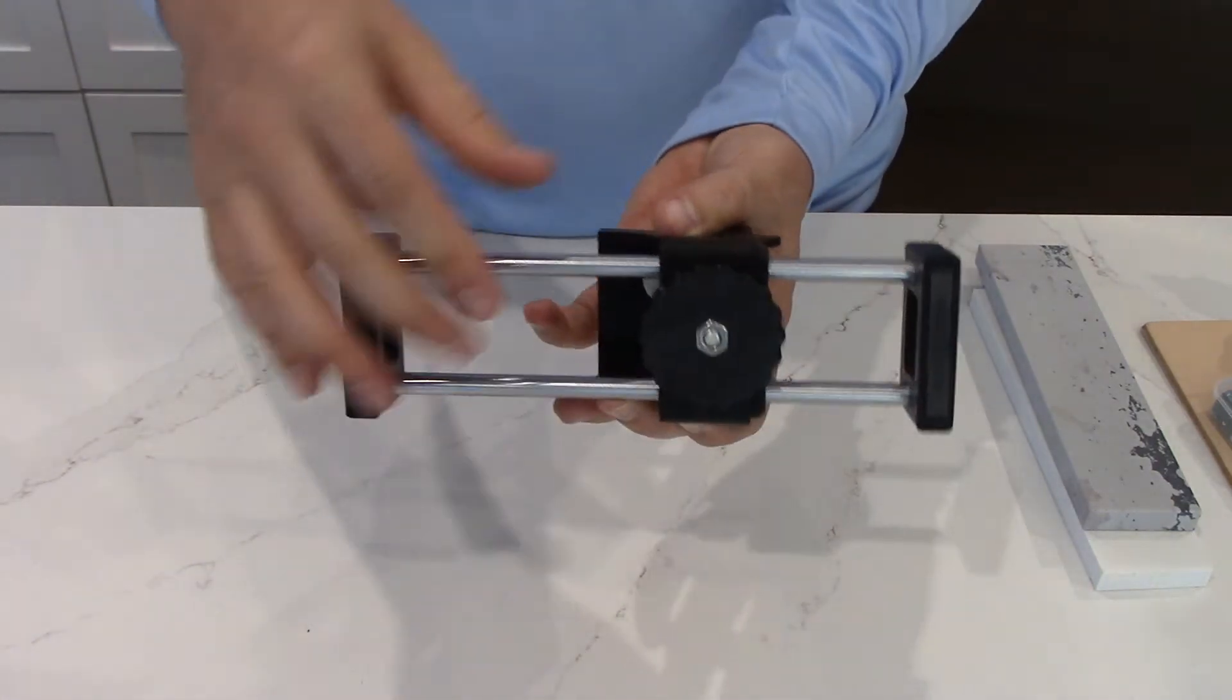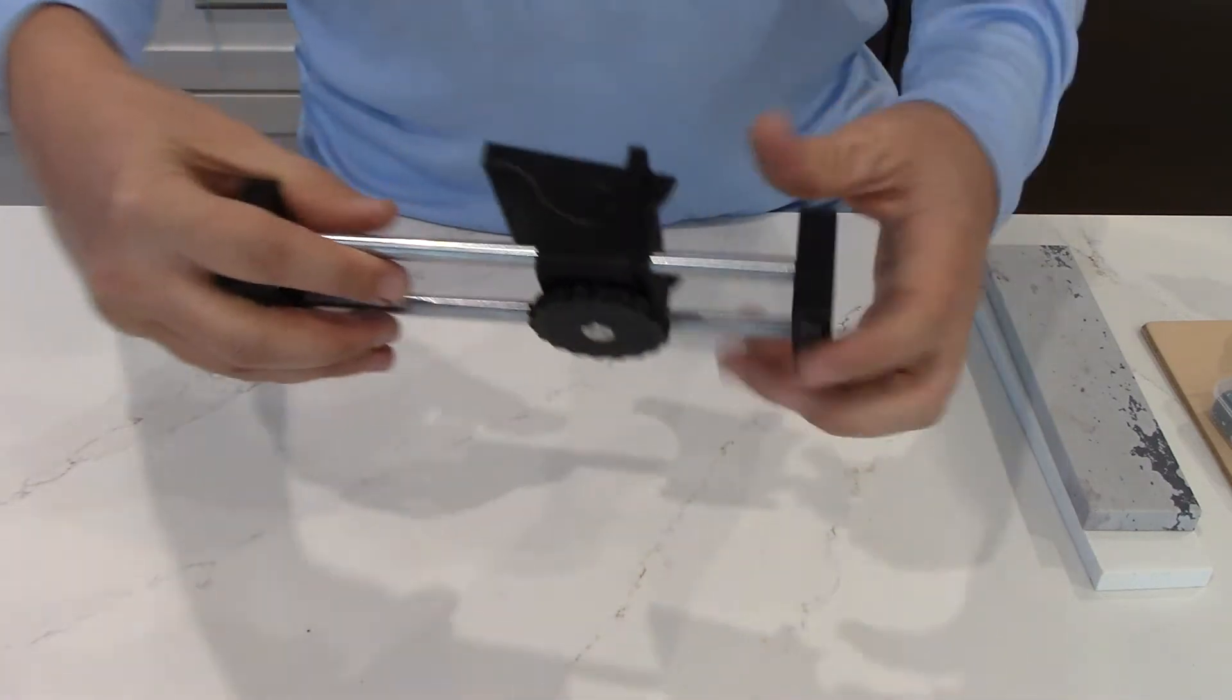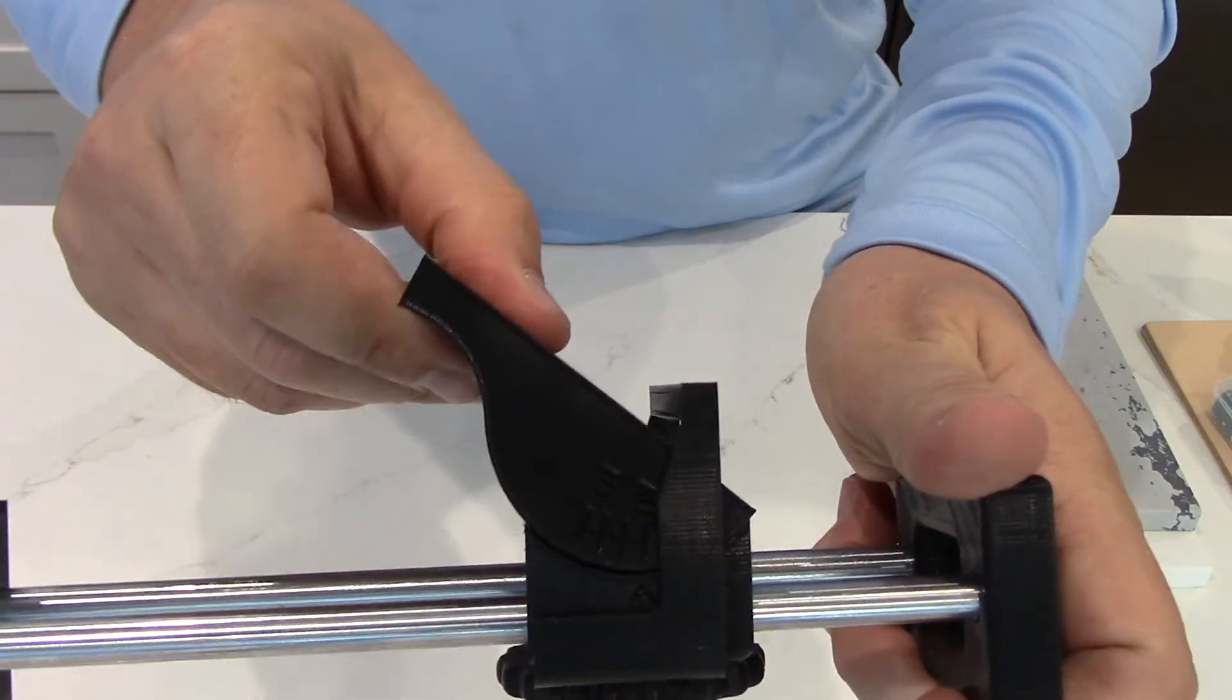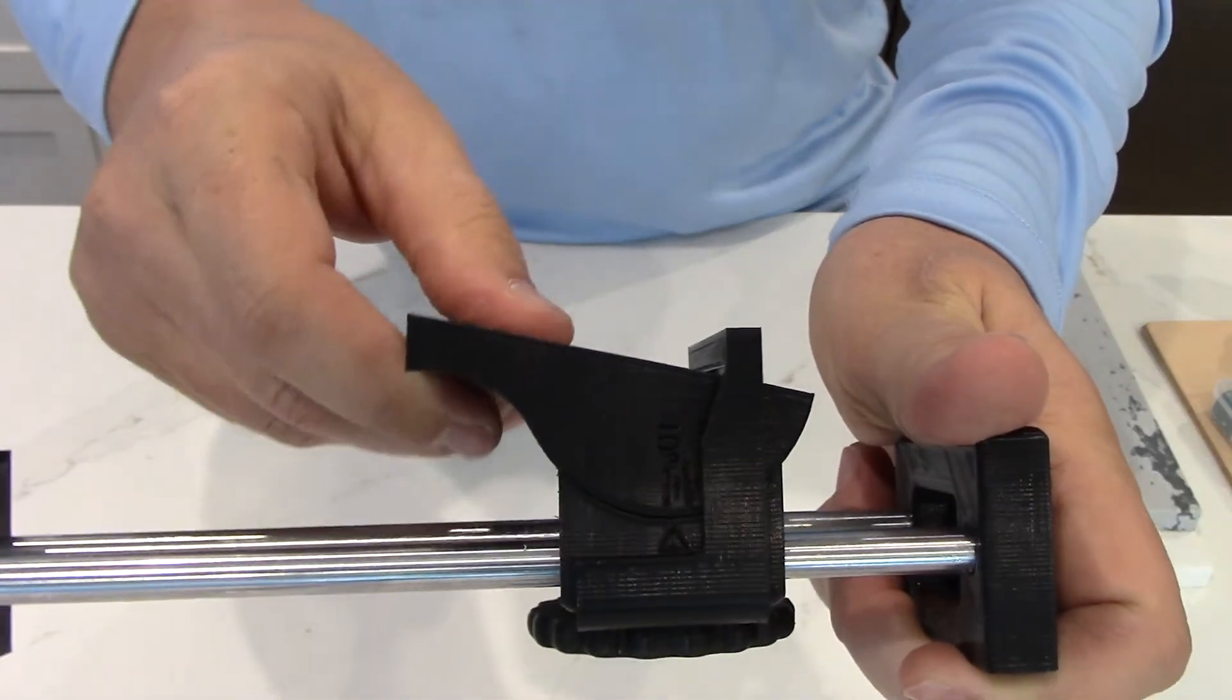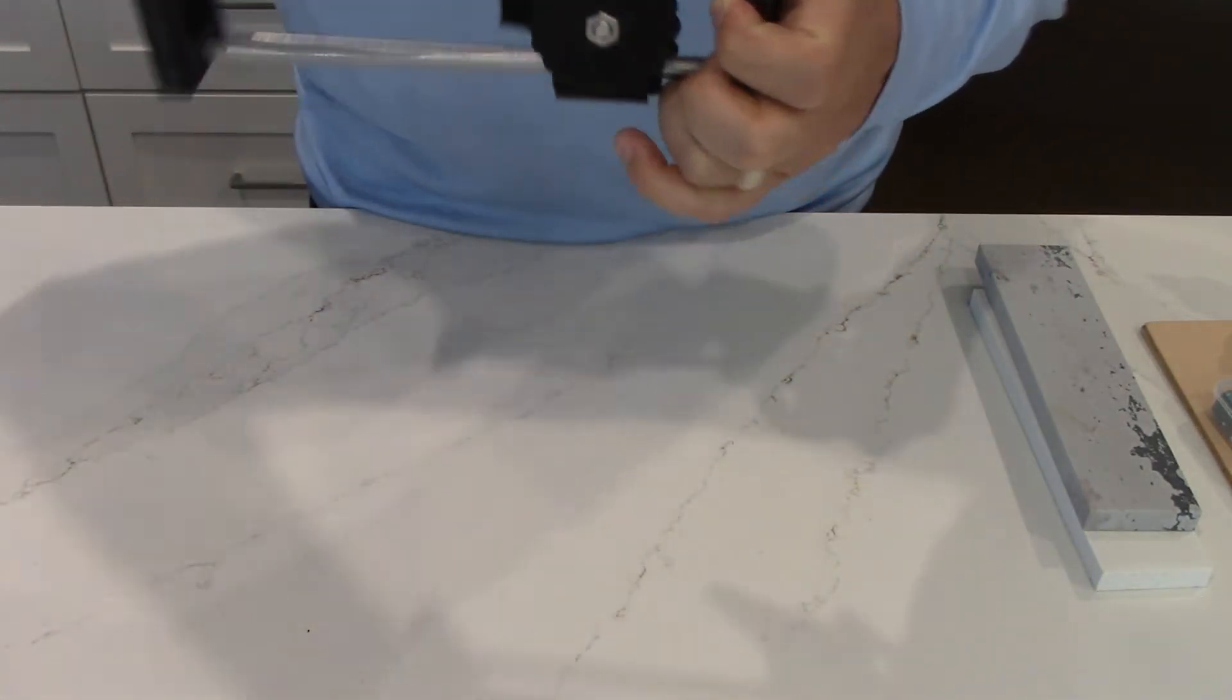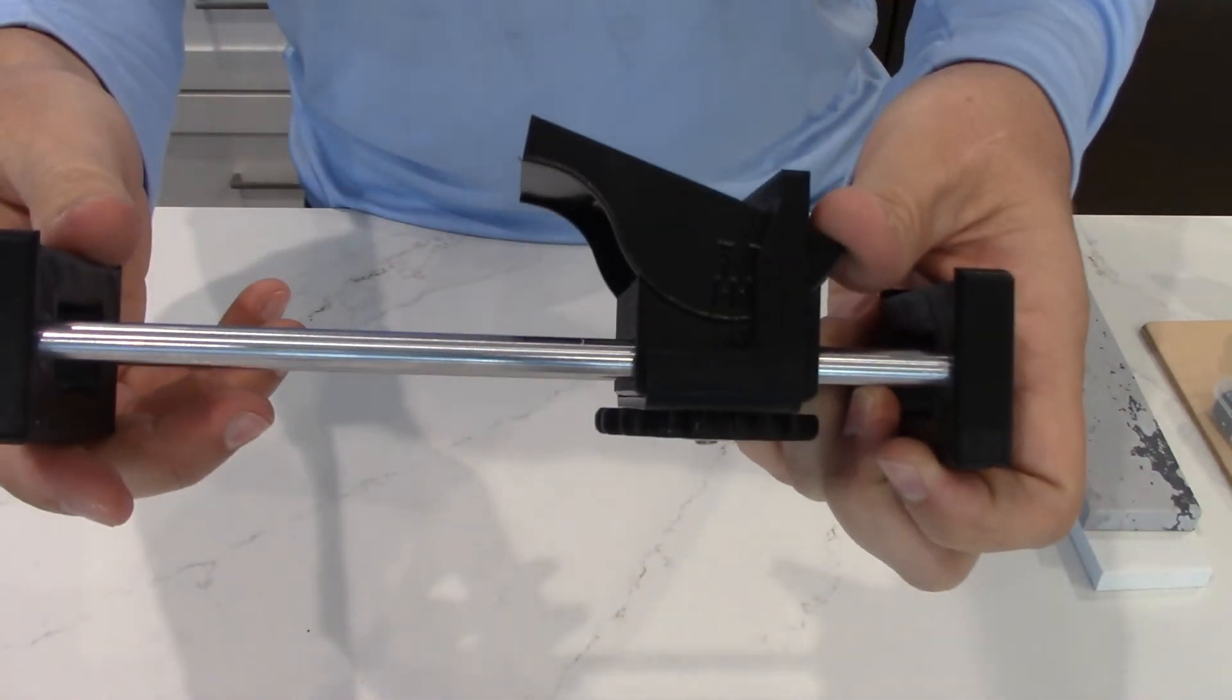So you loosen this thumb nut on the bottom, and then you can adjust the angle to whatever you want. So if I set it to 20 degrees, I can lock it down. And there it is.